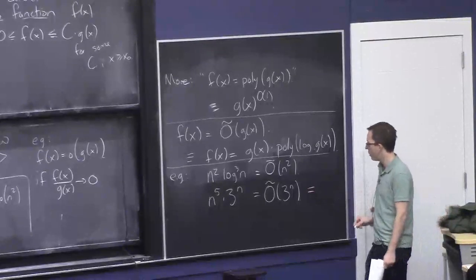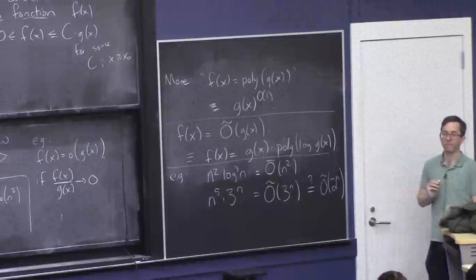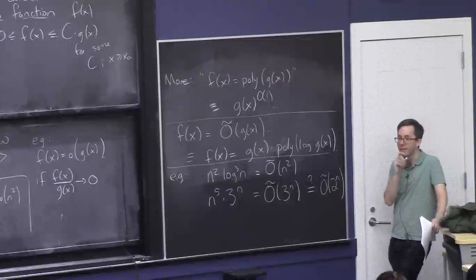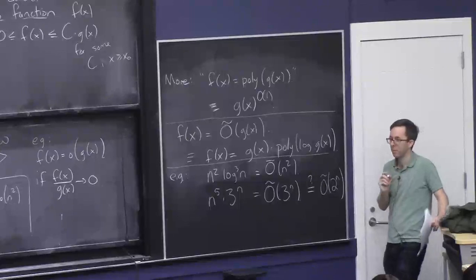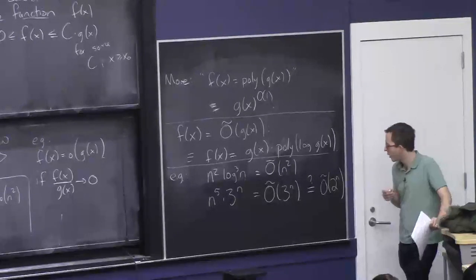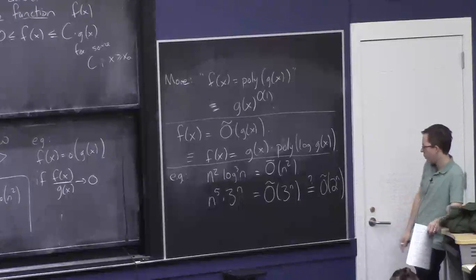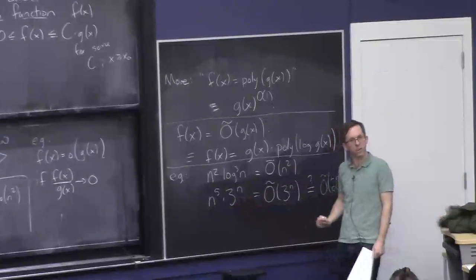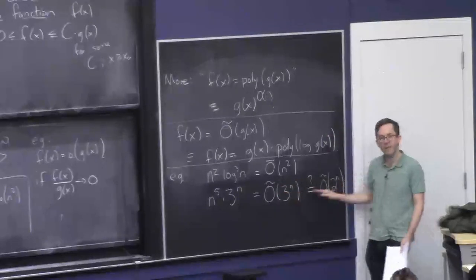Another example: n⁵ times 3ⁿ is O-tilde of 3ⁿ, because you allow poly-log factors in the expression and the log of 3ⁿ is n, so you're allowing extra powers of n. A warm-up question: is this O-tilde of 2ⁿ? No — 2ⁿ grows much more slowly than 3ⁿ. To really check, look at the ratio 1.5ⁿ and confirm it's not as small as poly(n), which it isn't. You cannot get too sloppy — there is a real difference between 3ⁿ and 2ⁿ.